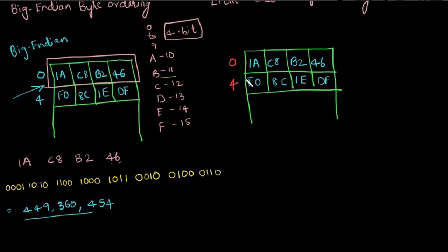Now, let us see what is the value of this word in Little Endian scheme. First, we have to consider this byte. The byte ordering starts from this byte that is from the rightmost byte. So, the first 4, 6, then B2, B2, then C8, this byte, then 1A.